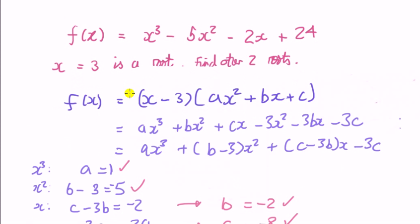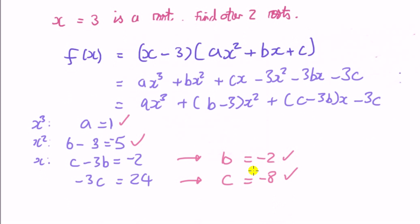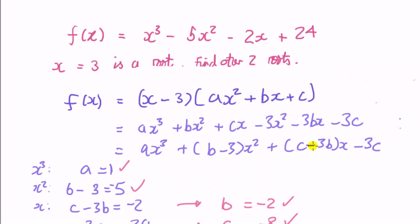So a is 1, b is minus 2, if b is minus 2, then here is minus 2, minus 3 is minus 5, there. And then c, well if c is minus 8, minus 8 times minus 3 times minus 2 is minus 2, and then that's obvious.